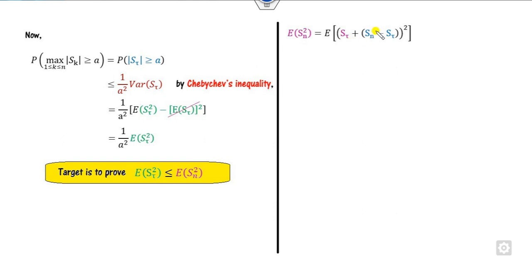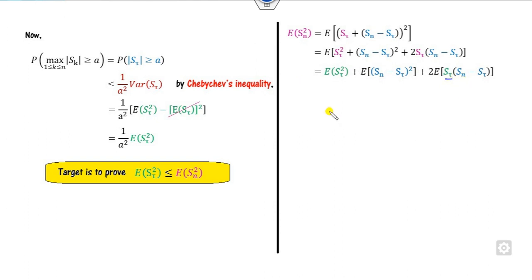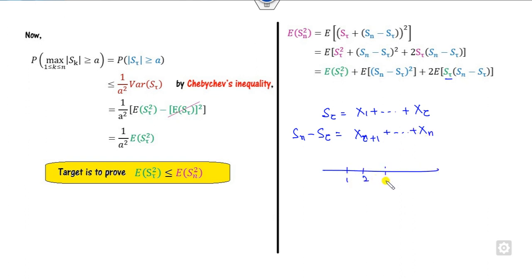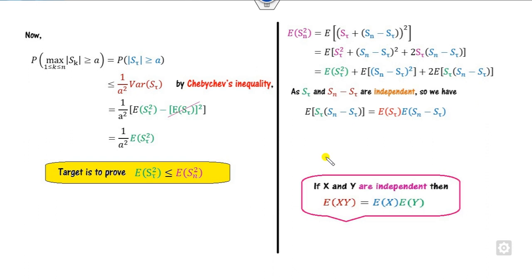Expanding E[S_n²] = E[(S_τ + (S_n - S_τ))²] = E[S_τ²] + 2·E[S_τ·(S_n - S_τ)] + E[(S_n - S_τ)²]. Since S_τ consists of X_1 through X_τ and (S_n - S_τ) consists of X_{τ+1} through X_n, these two parts are independent. For independent quantities, E[S_τ · (S_n - S_τ)] = E[S_τ] · E[S_n - S_τ] = 0 · 0 = 0. So the cross term is zero.